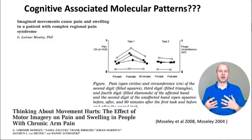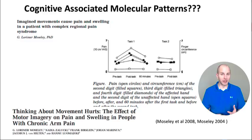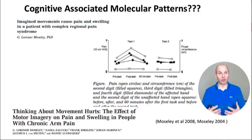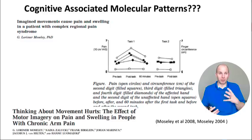These folks were given imagery tasks — people who had complex regional pain syndrome — where Moseley looked at giving them a visualization motor imagery task and then measured pain and swelling. They found that finger circumference and pain actually had physiologic changes with cognitive imagery tasks, showing some sort of neuroimmune connectivity. We see that scary movies, fears, anxieties, and cognitive patterns in our brain can materialize into real physiologic responses in our body.